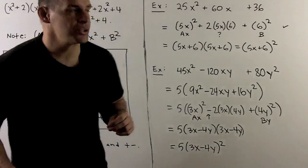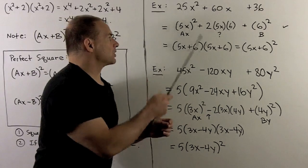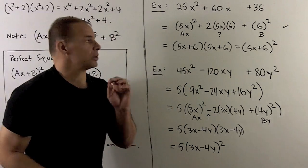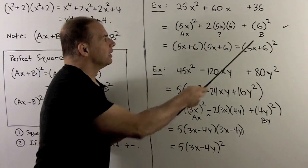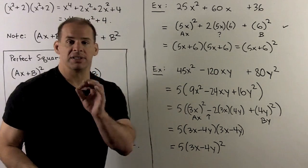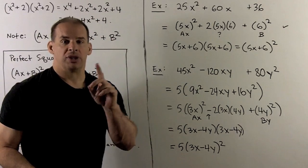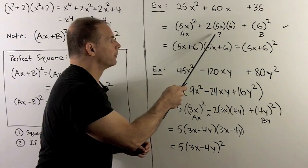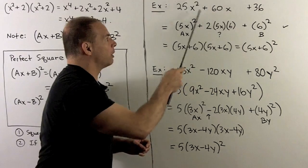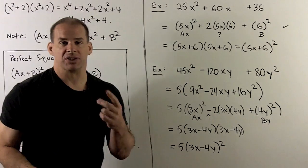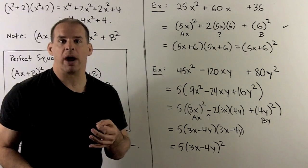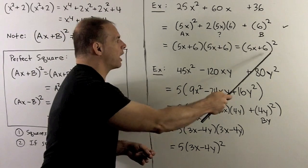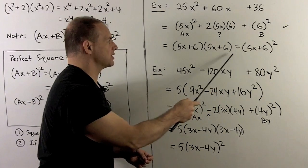For example, take 25x² + 60x + 36. Looking at the ends, 25x² = (5x)² and 36 = 6², so this is a candidate. Checking the middle term: 2 × 5x × 6 = 60x. Yes, that matches, so we have a perfect square. We apply the formula: (5x + 6)², or equivalently (5x + 6) times itself.